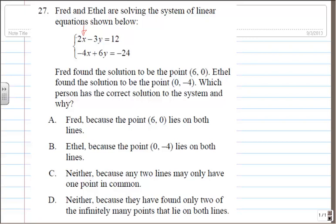So let's do that. I'm going to multiply the first equation by 2. The system will now be equivalent to this: 2 times 2x will be 4x, 2 times negative 3y will be negative 6y, 2 times 12 is 24. The second equation does not change: negative 4x plus 6y equals negative 24.